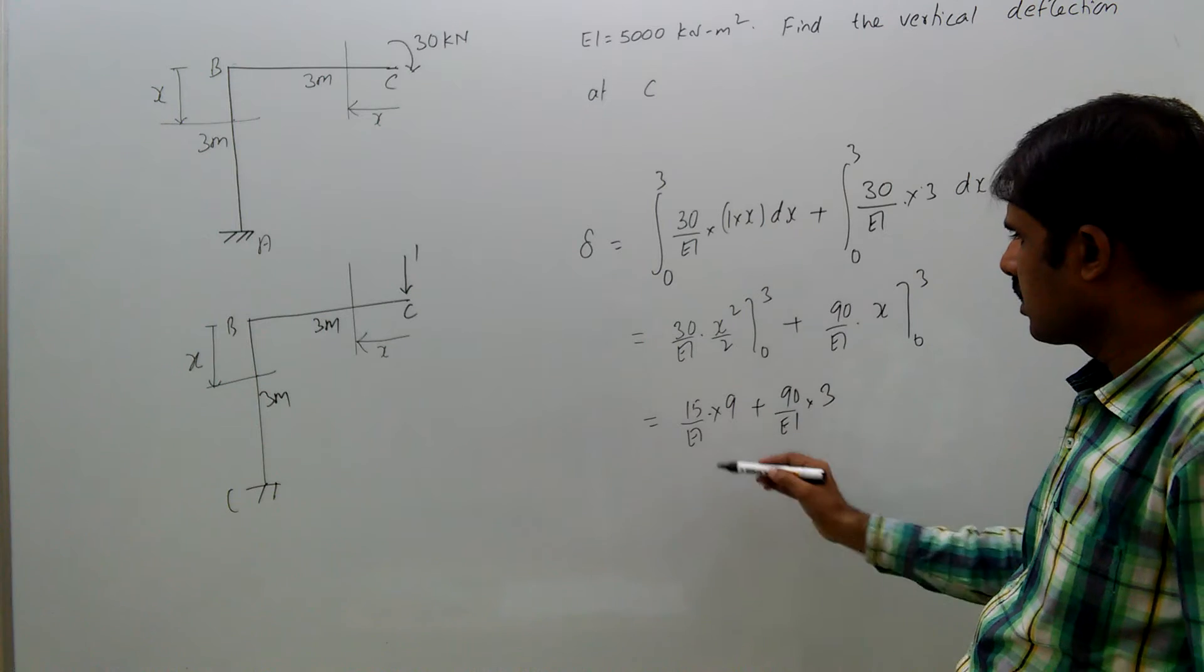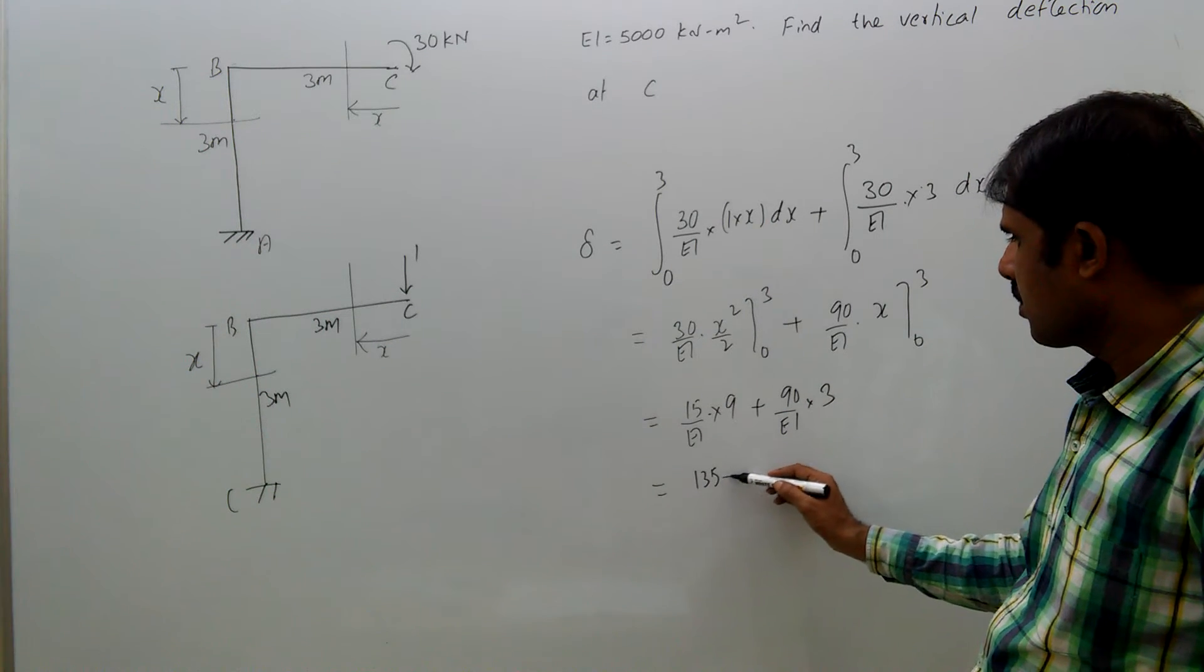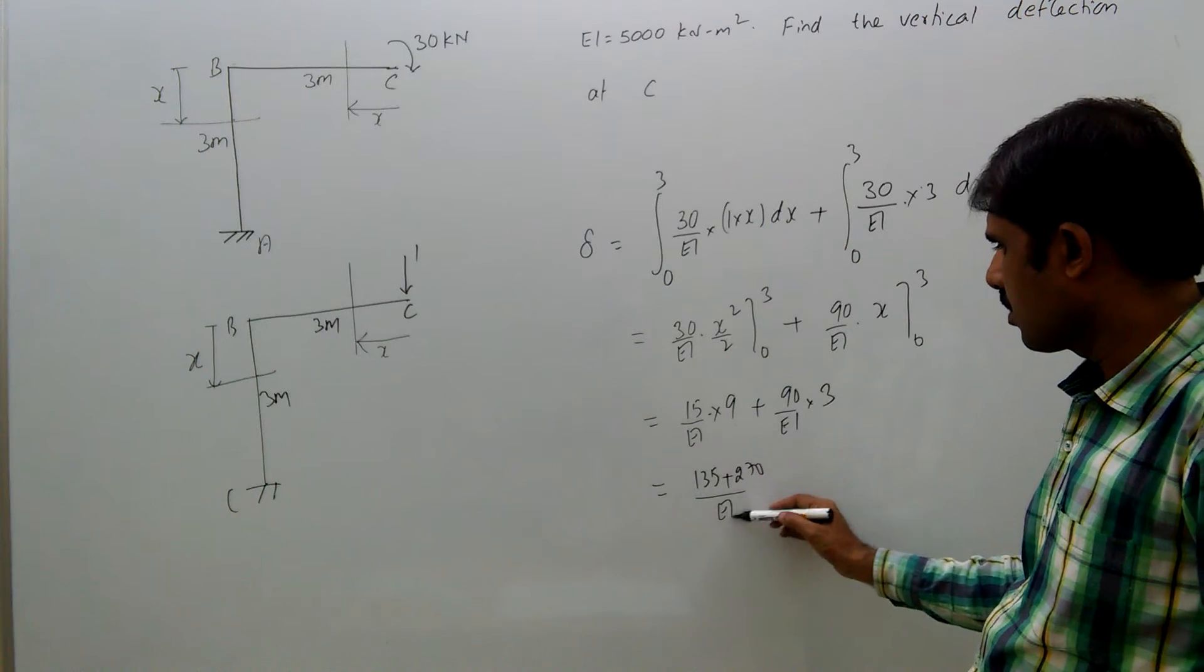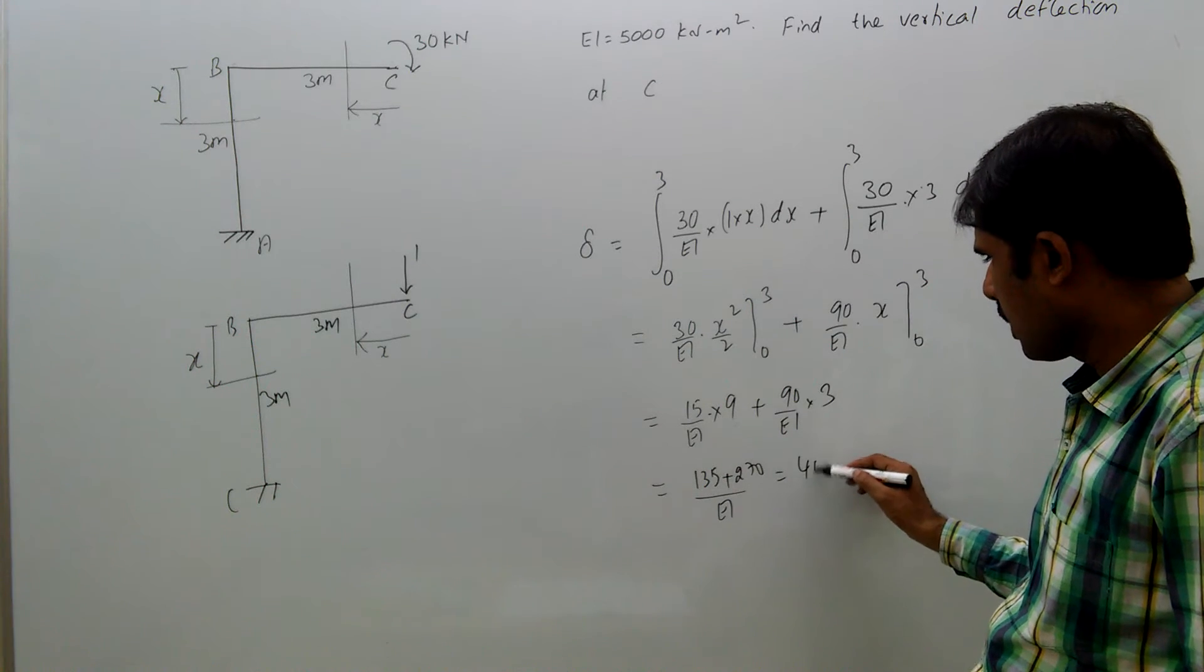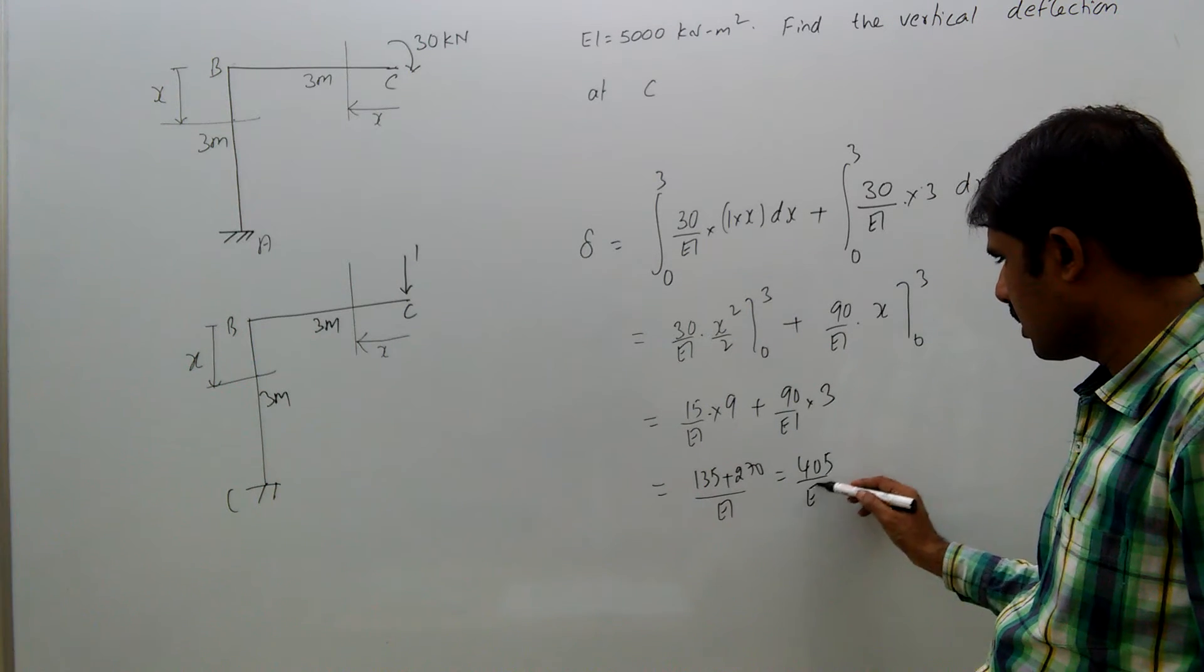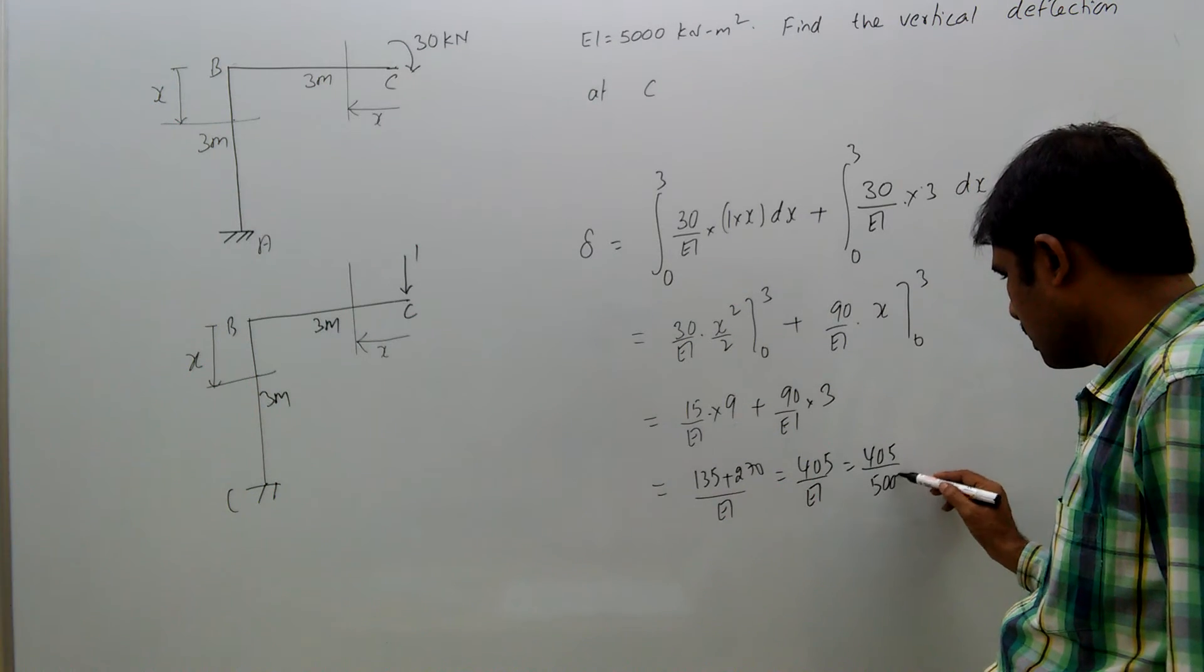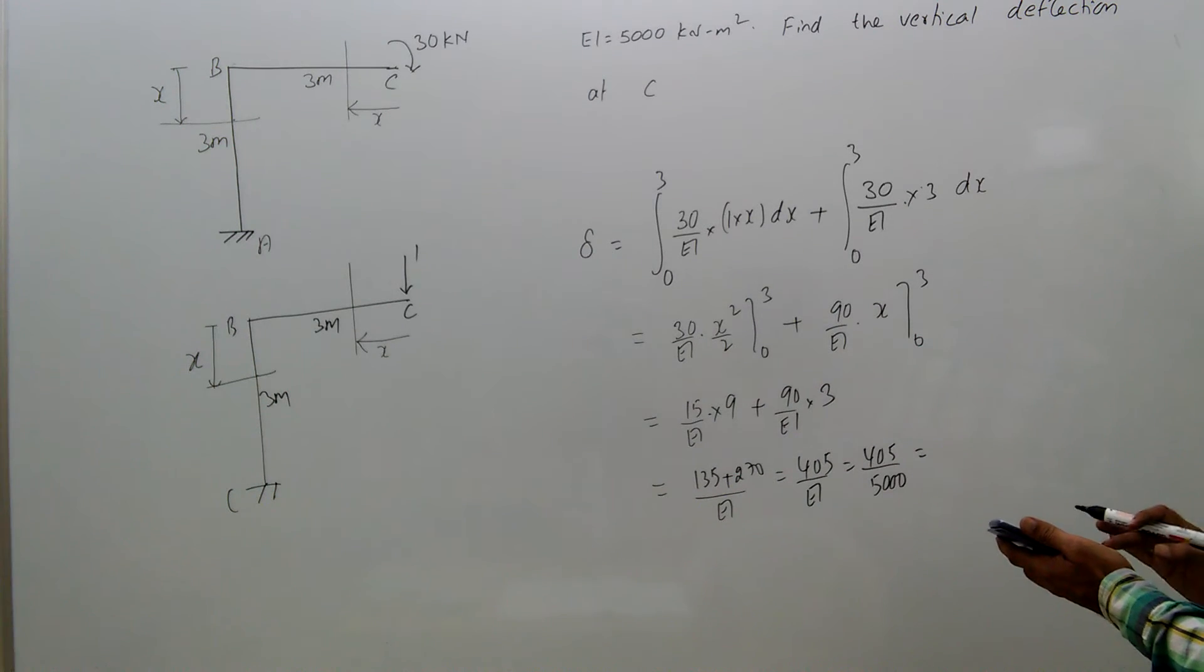0.3, that equal to 15, 135 plus 270 by EI, 270 plus 130, 405 by EI, 405 by 5000, that equal to